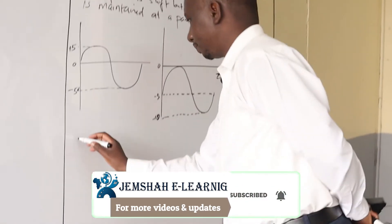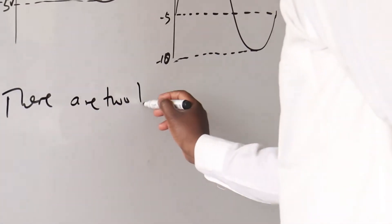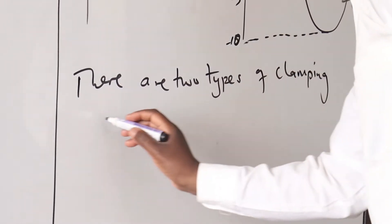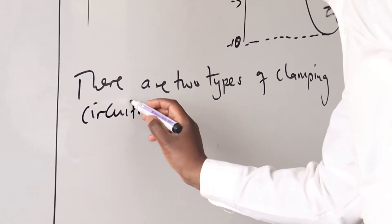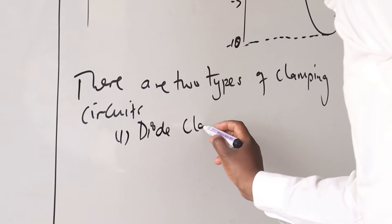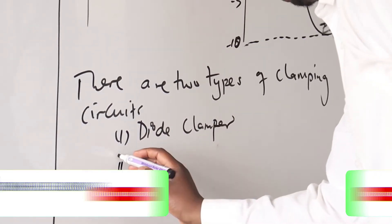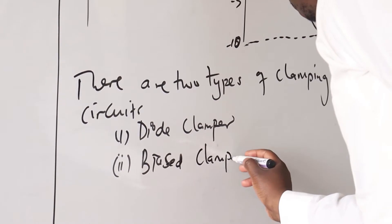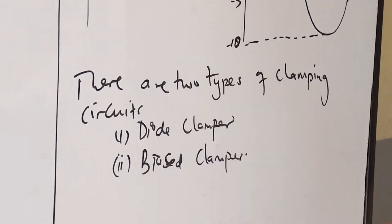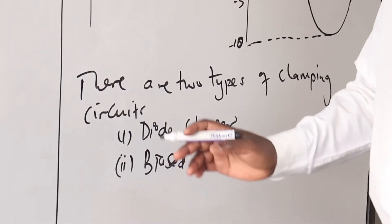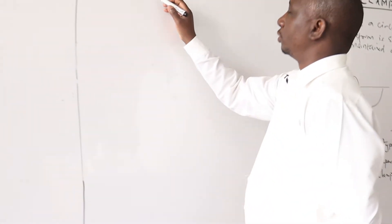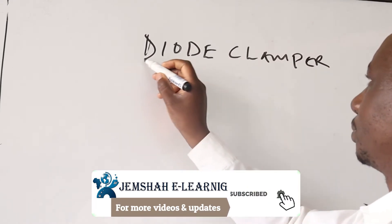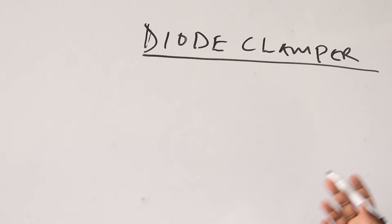There are two types of clamping circuits. The first is a diode clamp, and the second is an improvement of this — the biased clamp. I want to discuss these in detail using a diagram, so let us first draw a diagram to explain the diode clamper.